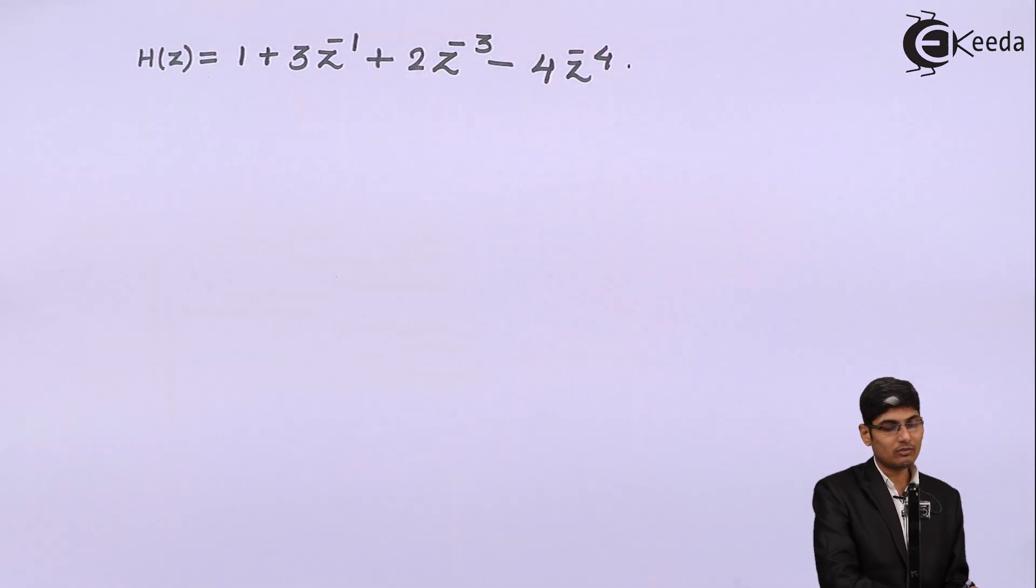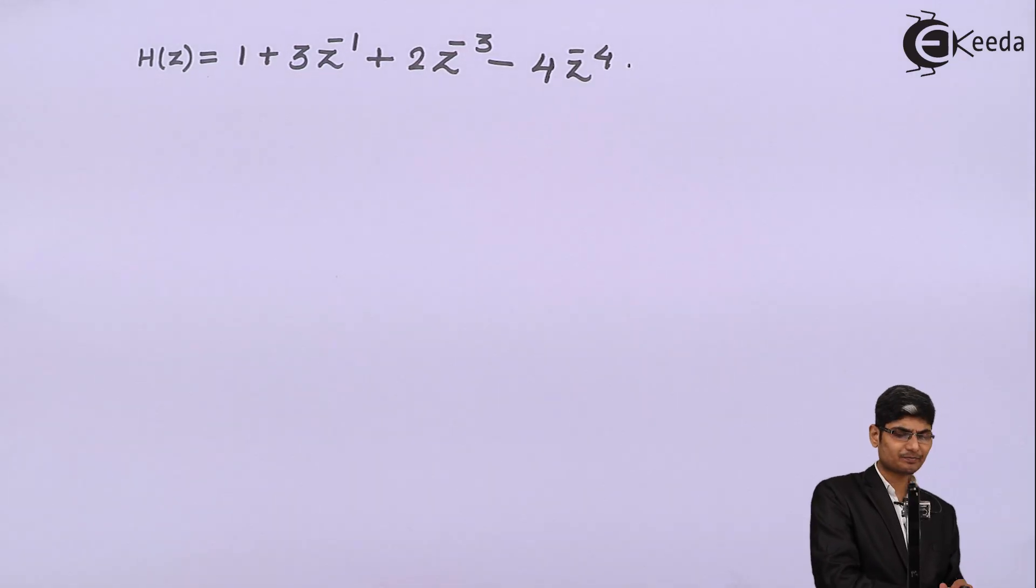Now we have received this transfer function and we have seen that there is only numerator. There is no denominator, that means this is an FIR filter which has all zeros to it. There are no poles, or the poles are all at origin, that is at Z equals 0.